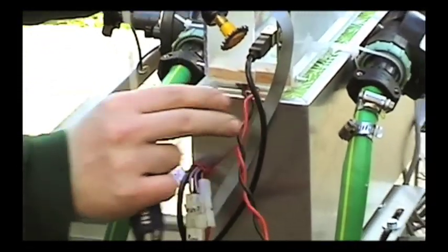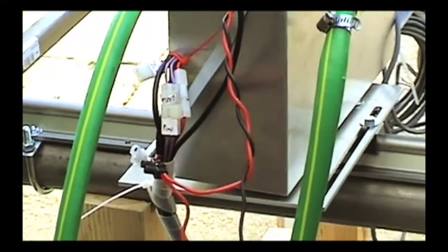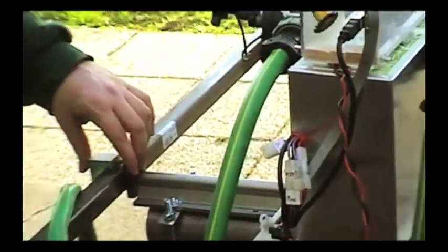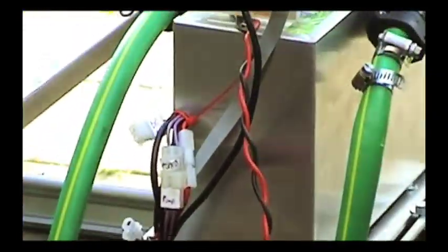So we decided to get rid of the batteries because they were extra weight, and the stepper motor was also running on 24 volts, which is the same as our power supply. We split the power supply wire coming through here and just wired it into the stepper motor.